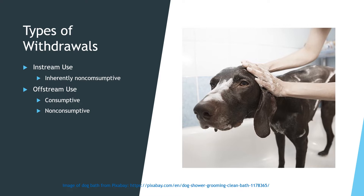In the case of consumptive use, an example would be agriculture, where crops are irrigated and the plants use the water to create new biomass and to transpire, so that water is not returned. In non-consumptive use, water may be used in a municipal context by people — it's flushed down a toilet, goes to a water treatment plant, is treated, and then returned to a river.